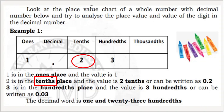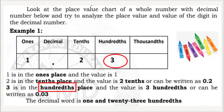Digit 2 is in the 10's place of the decimal place value chart. Its value is 2 tenths and can be written as 0.2. Digit 3 is in the 100's place, and the value is 3 hundredths, or can be written as 0.03.